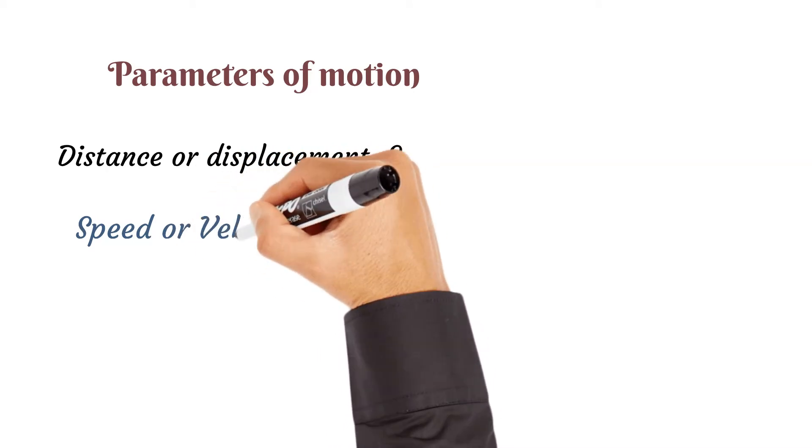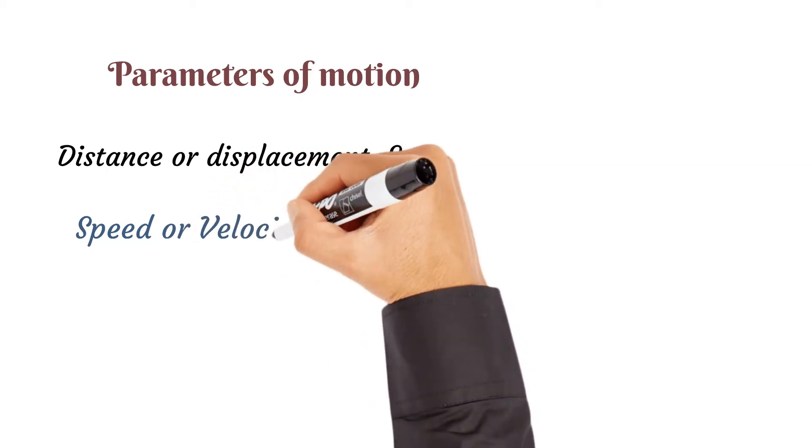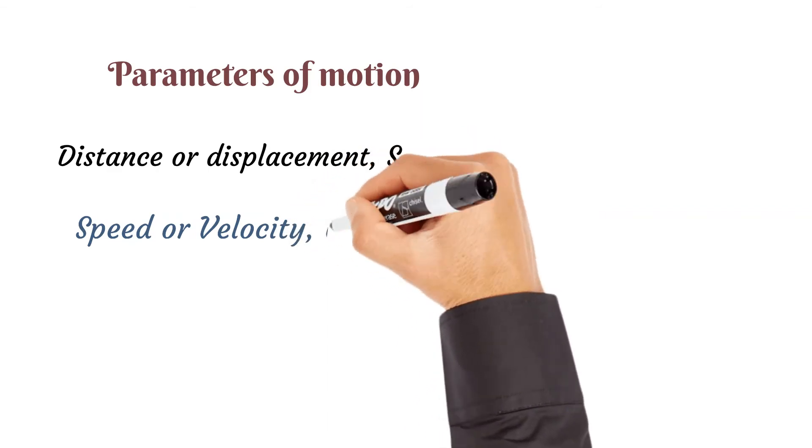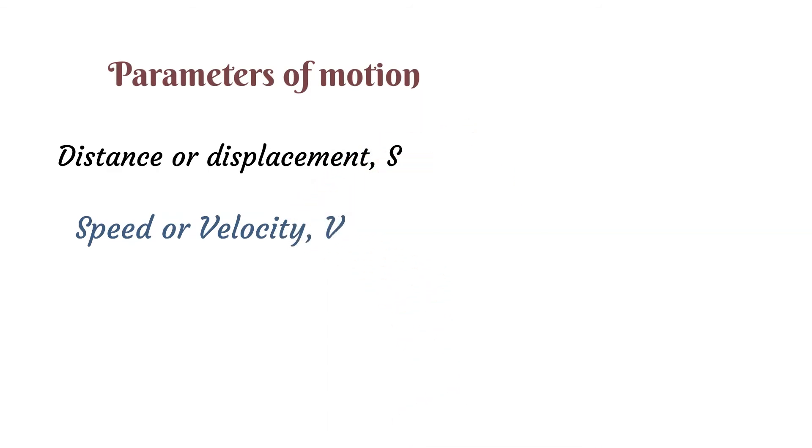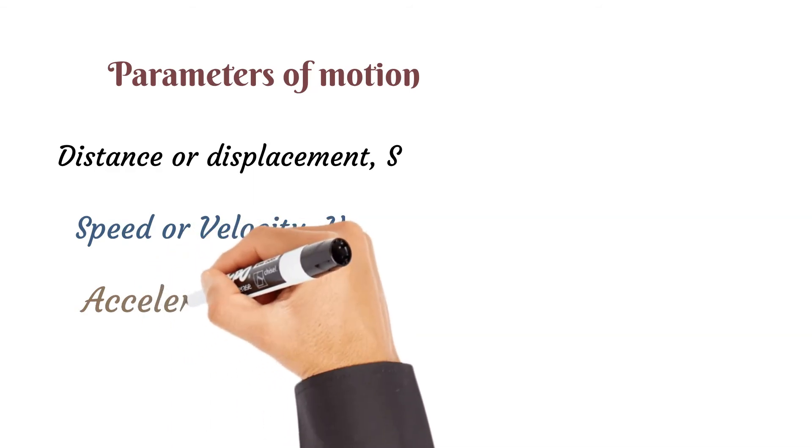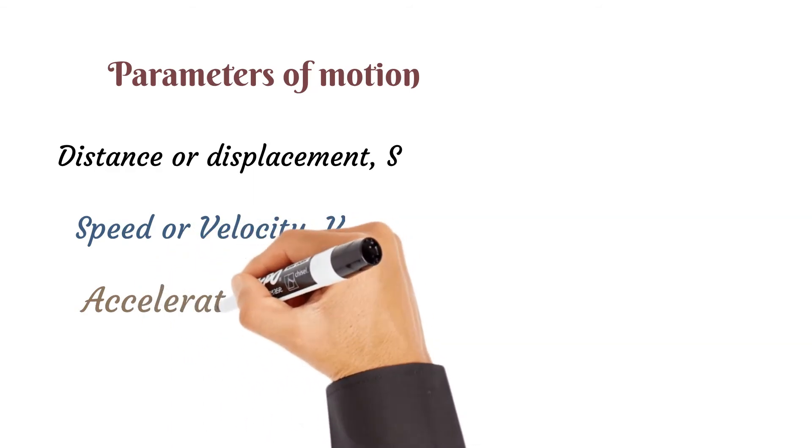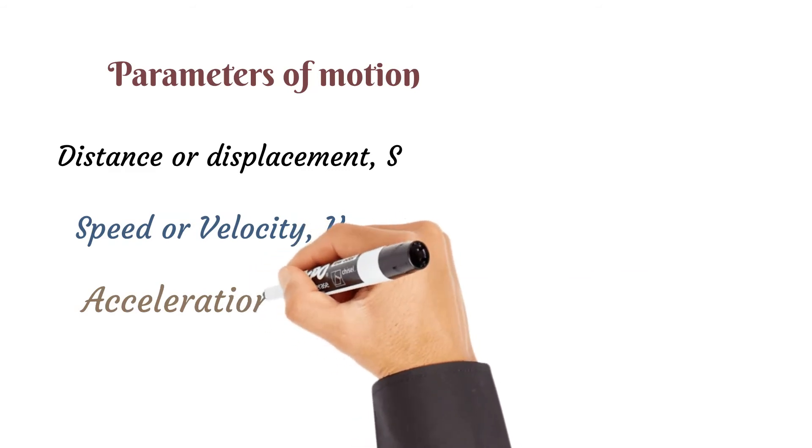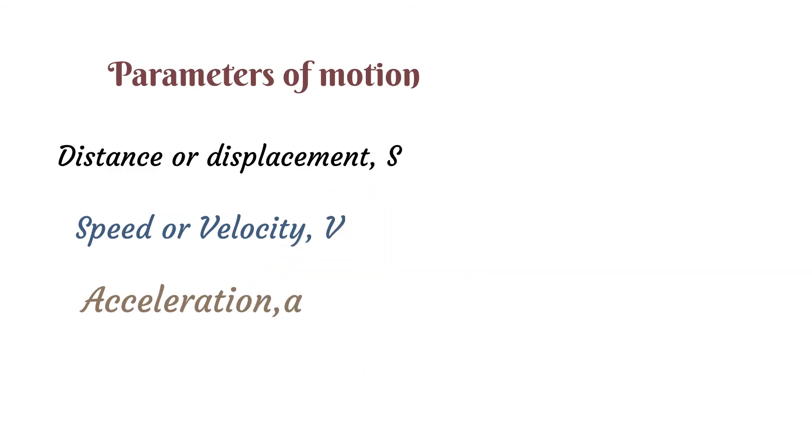Next, speed or velocity. Speed is scalar, velocity is vector, both denoted by v. Speed is distance over time, velocity is displacement over time. Next we have acceleration, the rate of change of velocity, denoted by the letter a. And finally we have time, which is the measure of event, denoted by letter t.